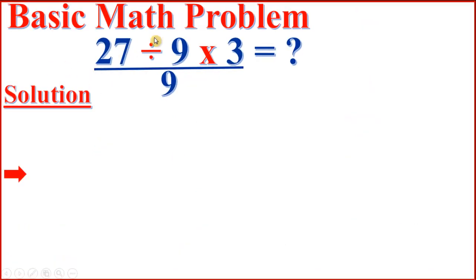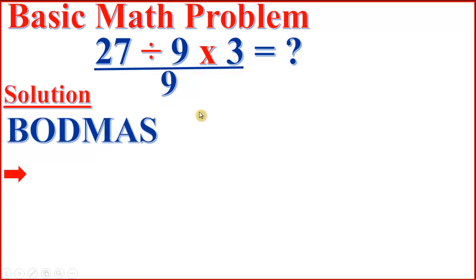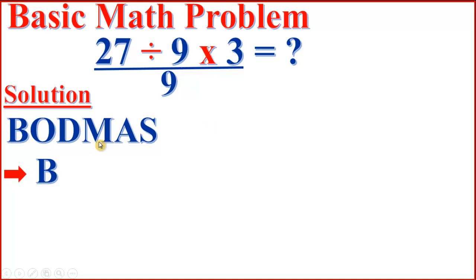In order to solve this basic math problem, first we have to understand the order of operation — that is BODMAS. BODMAS is a set of rules for solving maths equations and expressions with multiple operations. This set of rules ensures that all maths equations are solved in the same way. If equations are solved simply in the order they appear, you may end up with the wrong answer.